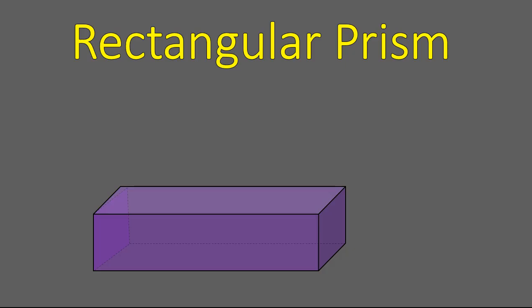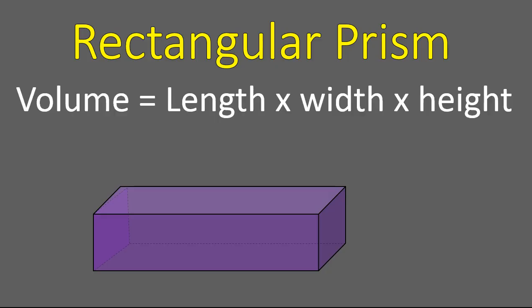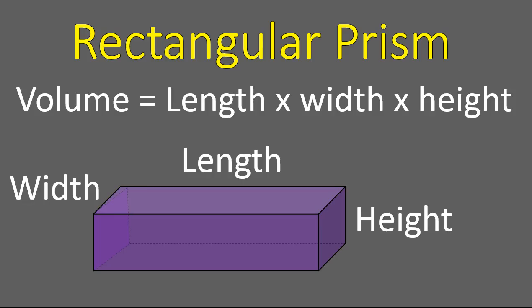So with a rectangular prism, when we're trying to calculate the volume, we would use this equation. The volume is equal to the length times the width times the height. Where this is the length, this is the width, and this is the height.